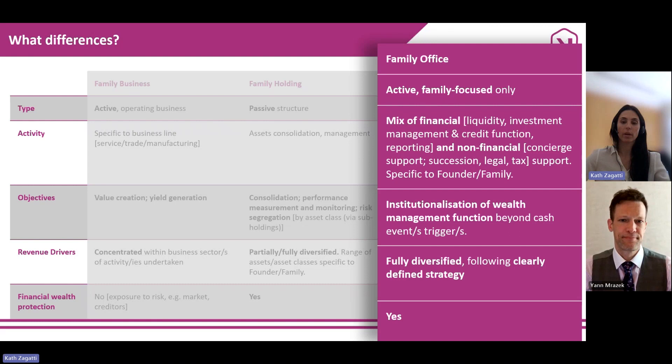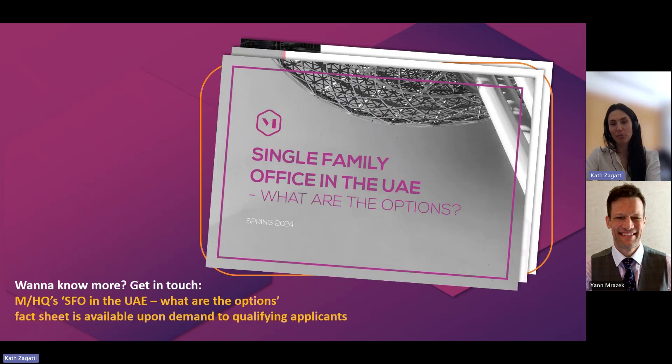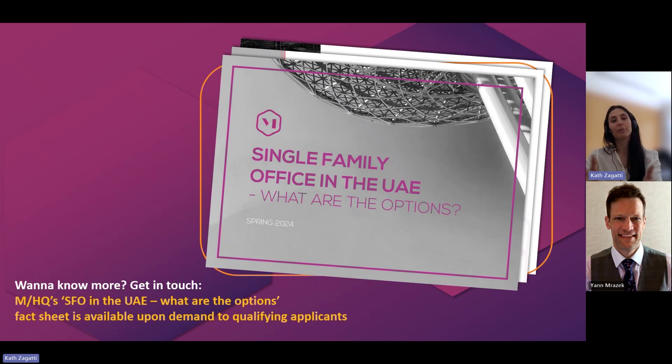So I understood that the common feature among these three concepts is the family, and the differences lie in the type, activity, and objectives of the entity — which can be active or passive, focused on provision of services to the family, or purely holding, and so on. Exactly — if we understood that, we are in the money. Thanks, Jan. And again, for those of you who want to know more about SFOs, we do have a comprehensive fact sheet on this topic describing all options of SFOs available here in the UAE, and we are happy to share that with qualifying applicants. Thanks again for today.